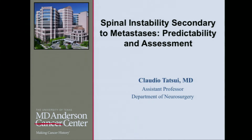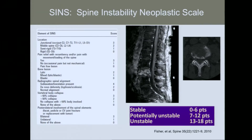I changed the title a little bit to Spinal Instability Secondary to Metastasis, because we are concerned with whether the spine is stable or not in our patients. A big advancement was the publication of this paper, where a panel of specialists got together and set criteria for what would be the risk factors for instability, and based on this, a score was created.